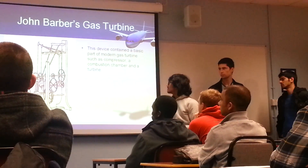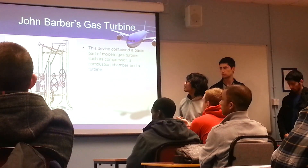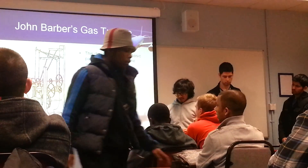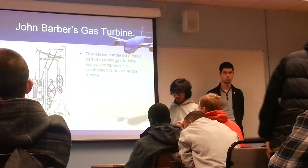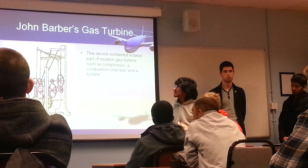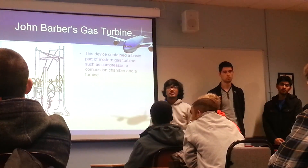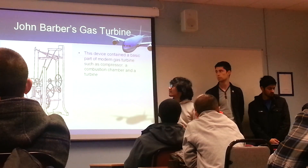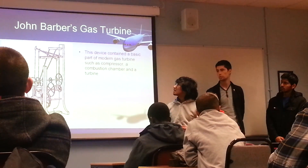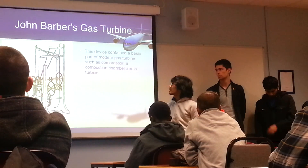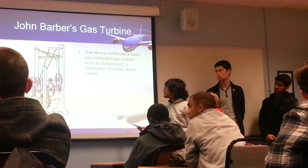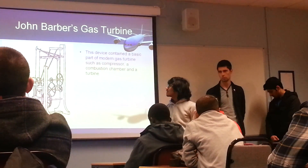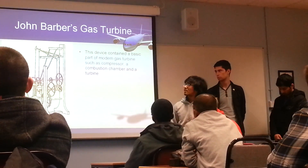The last historical development is John Barber's gas turbine, invented in 1791. It contains the basic parts of a modern gas turbine, such as a compressor, combustion chamber, and turbine. The main difference from a modern gas turbine is that it was equipped with a chain-driven turbine and used a reciprocating type compressor.